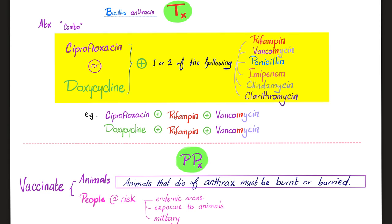How can we prevent anthrax? Vaccinate animals and people. Anthrax is one of those diseases where it might make more sense to vaccinate the animals than the people — the anthrax vaccine is more effective in animals than people. Animals that die of anthrax must be burned or buried to prevent the spread. You vaccinate people at risk, such as those living in endemic areas, people exposed to animals, and military recruits.